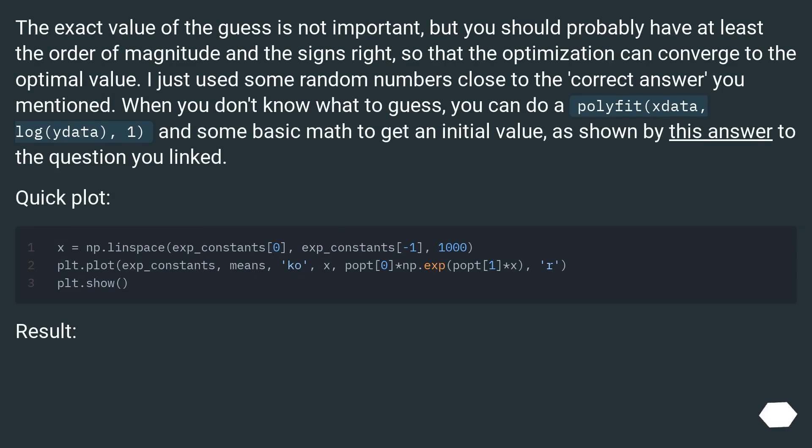The exact value of the guess is not important, but you should probably have at least the order of magnitude and the signs right, so that the optimization can converge to the optimal value. I just used some random numbers close to the correct answer you mentioned. When you don't know what to guess, you can do a polyfit(xdata, log(ydata), 1) and some basic math to get an initial value, as shown by this answer to the question you linked. Quick plot.